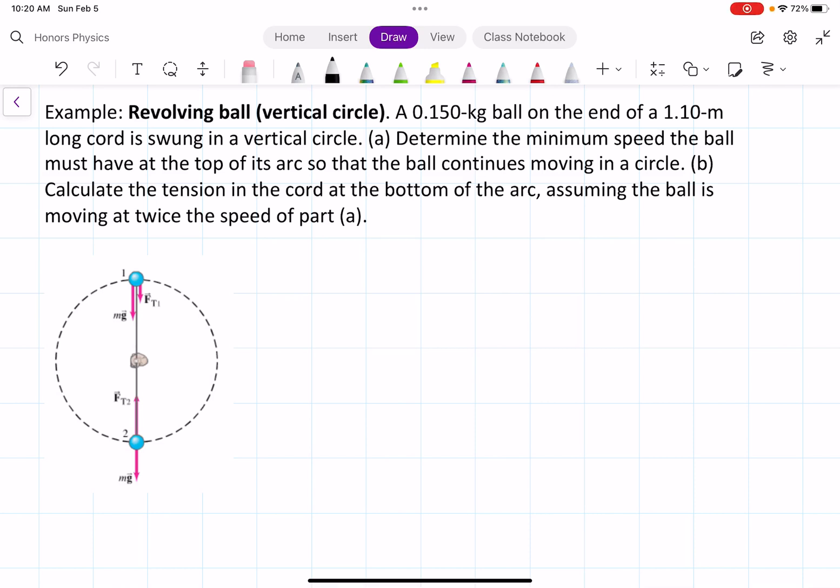In this example, we have a 0.15 kilogram ball on the end of a 1.1 meter long cord swung in a vertical circle.